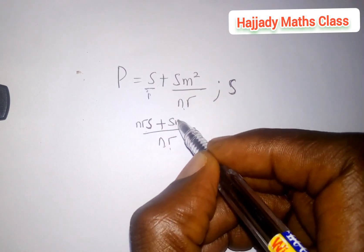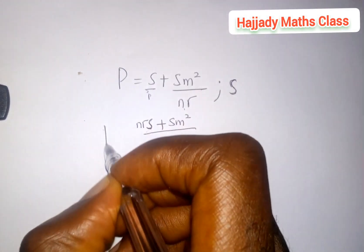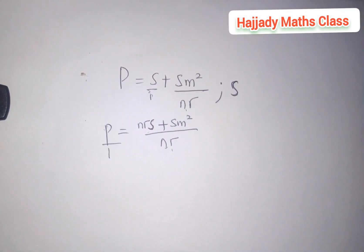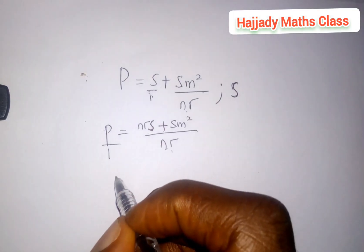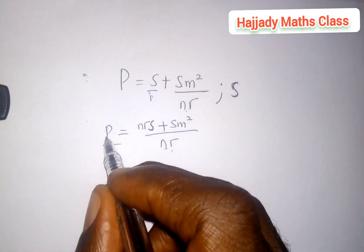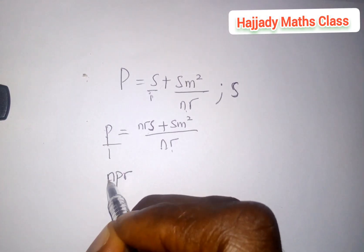Which equals p. So the next thing for us to do is to cross multiply. So here I have npr, this multiply by this gives me npr equals nrs plus sm square.